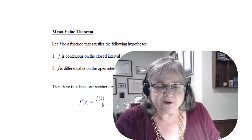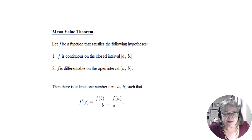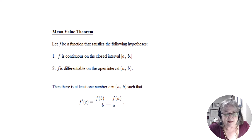The mean value theorem says: let f be a function that satisfies the following hypotheses — it starts off like Rolle's. f is continuous on the closed interval from a to b. f is differentiable on the open interval from a to b. Then there is at least one number c within that interval such that f prime of c is equal to f of b minus f of a over b minus a.